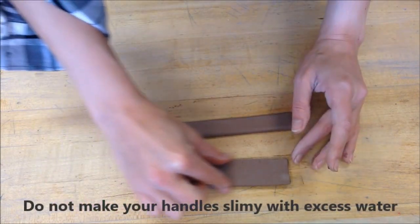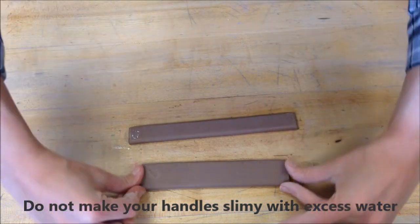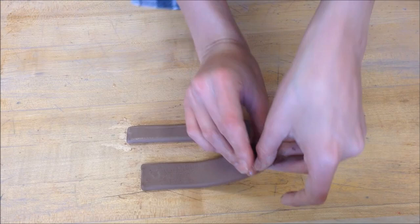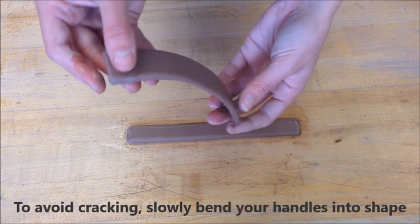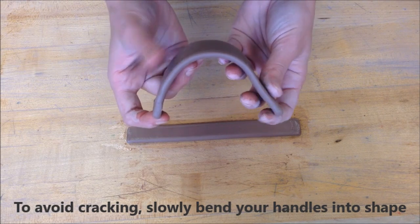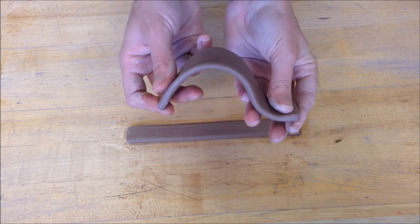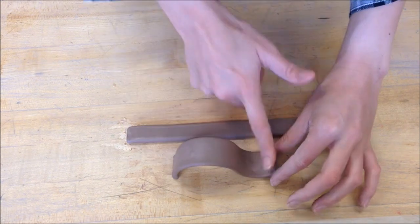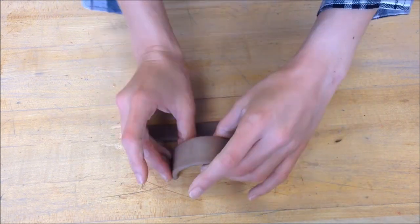You can use just a tiny bit of water on your fingertips to round out your edges, but don't make your piece slimy. To avoid cracking, you can slowly bend that handle into your shape. Think about what's going to be comfortable in the hand when you use that handle.